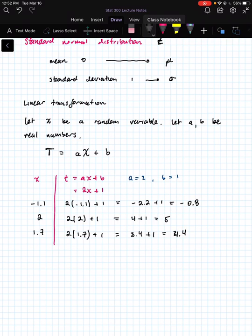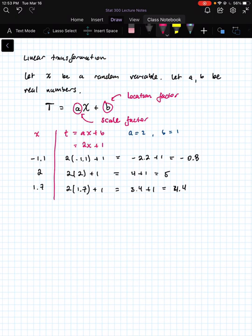So if we started out with values that were relatively close to 2, lower in value in magnitude, then what our transformation might do, depending on what the values of a and b are, is it might scale them up and shift them. So for that reason, we call a the scale factor for the transformation because it scales up or down, and b is the location factor.